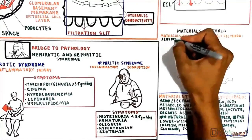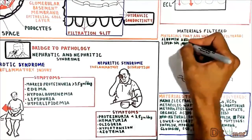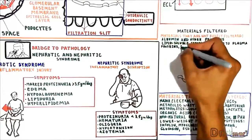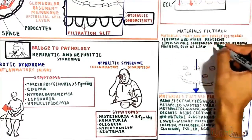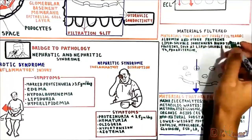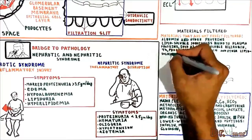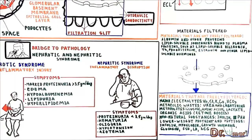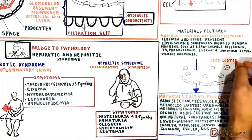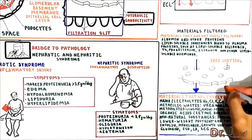The following are not freely filtered: albumin and other plasma proteins; lipid-soluble substances bound to plasma proteins such as lipid-soluble bilirubin, T4, progesterone, estrogen, and other lipid-soluble hormones. Unbound lipid-soluble substances such as free cortisol are filtered and can appear in urine.